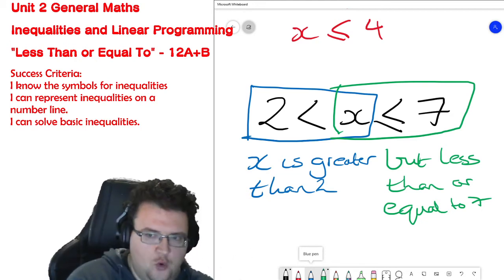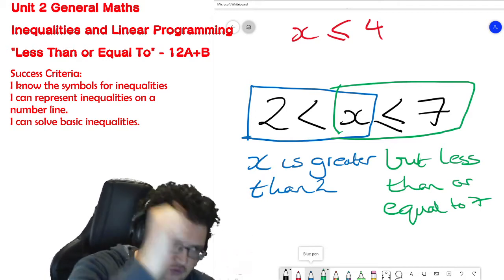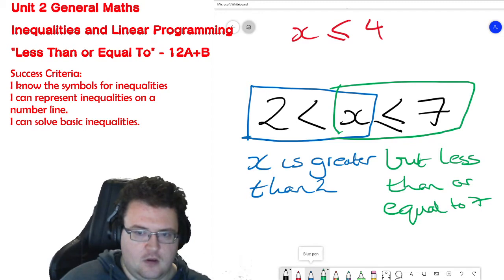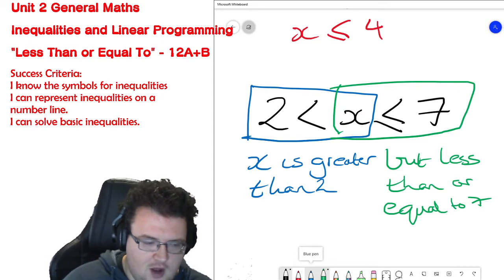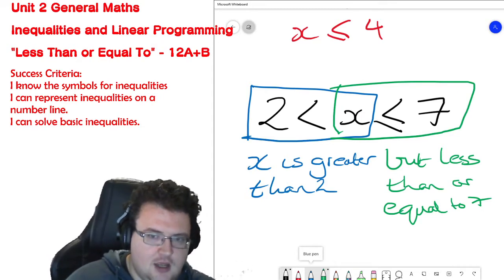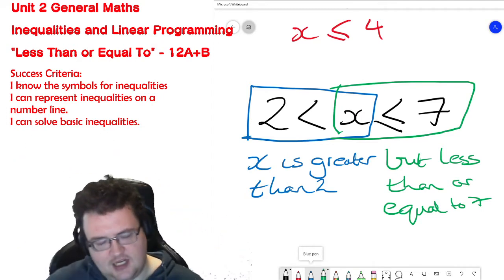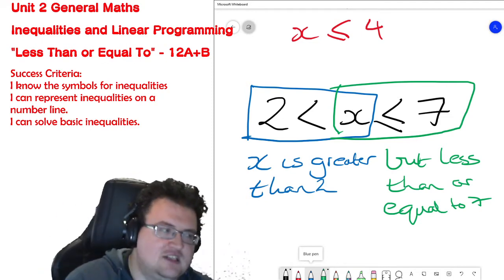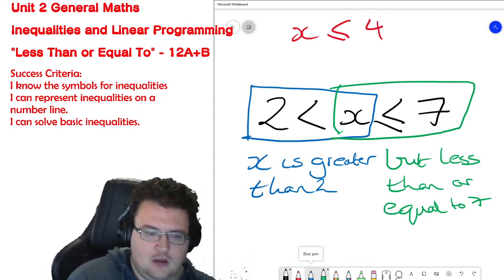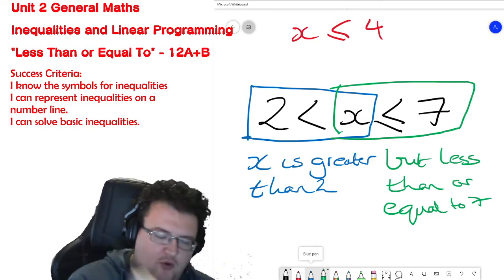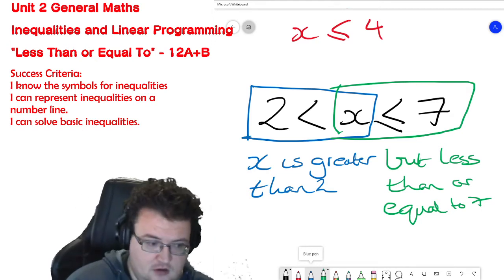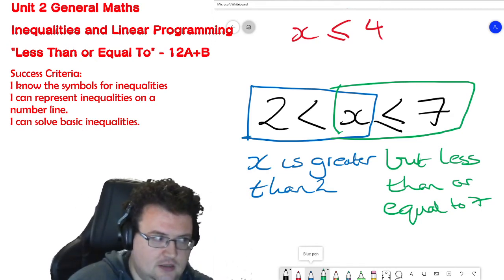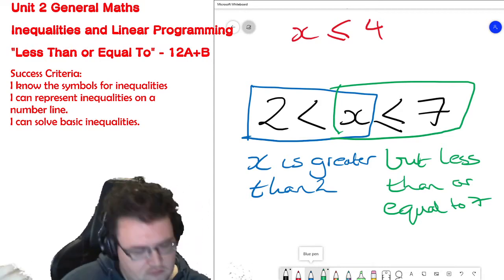Is the number 2 a valid answer to that inequality? No, because x is greater than 2. So I can have 2.1 or 2.01 or 2.001 or 2.00001, etc., but I can't have 2 as a valid answer. I can have 6, 6.9, 6.99, 6.9999, I can have 7. They are valid answers. 7.1 is not.